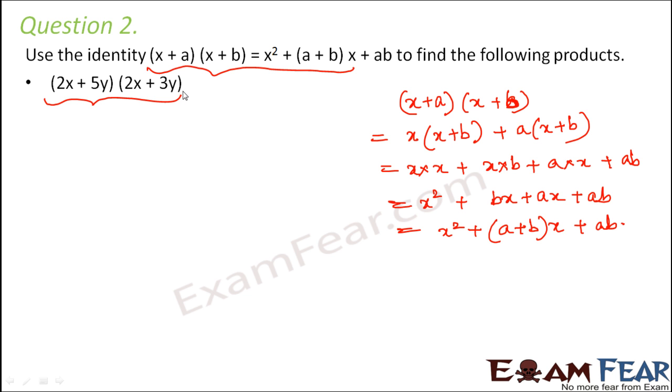One term is same, that is 2x, but the other term is different. In this case, 2x is behaving like x, 5y is behaving like a, and 3y is behaving like b. If you compare this expression with the standard expression, that is how the relation is.